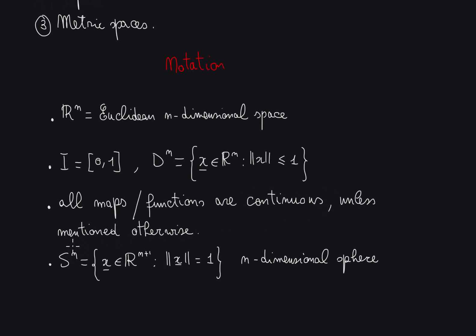The last notation I feel like introducing: for the n-dimensional sphere in Rn plus 1, it's defined as the set of vectors x in Rn plus 1 such that the norm equals exactly 1.